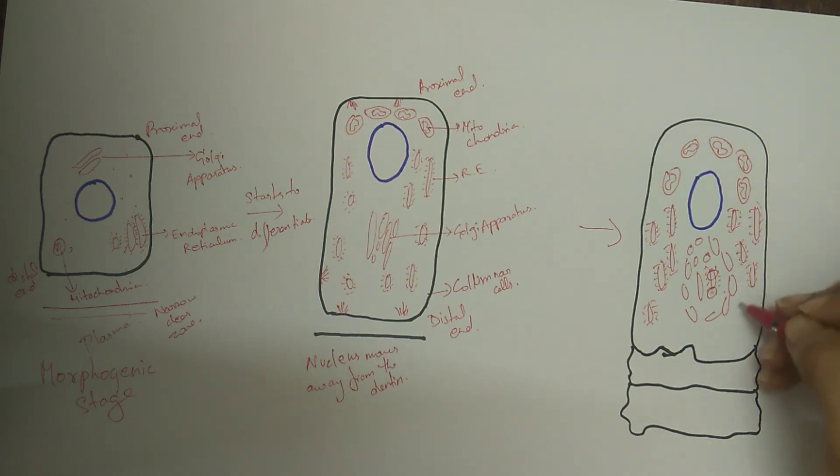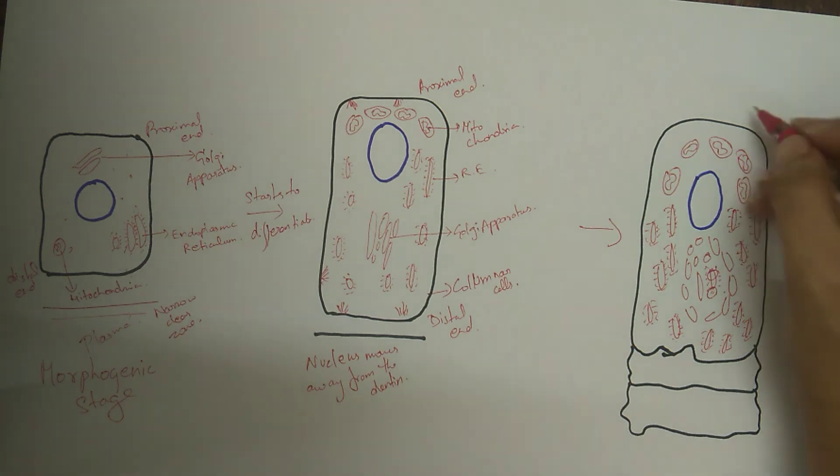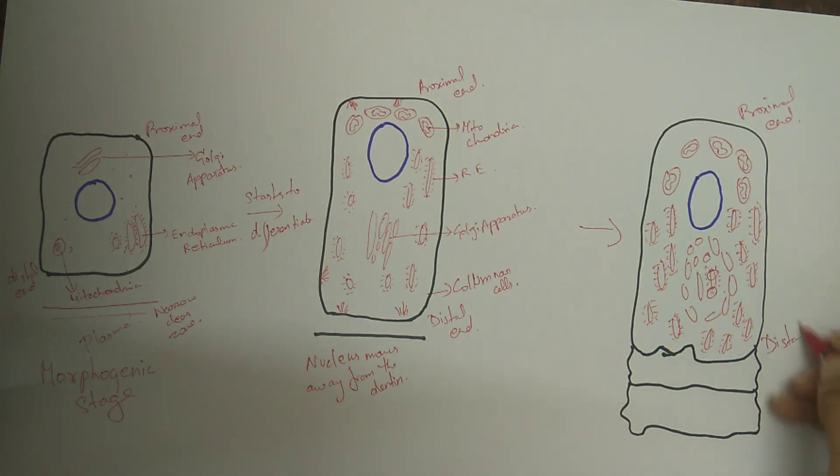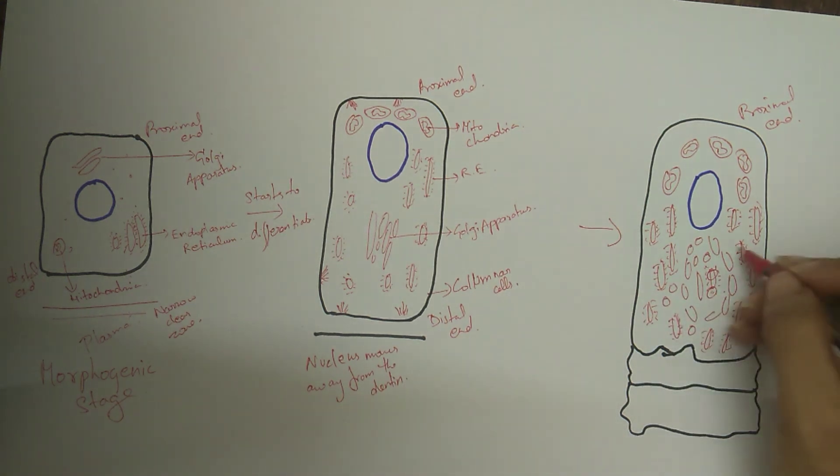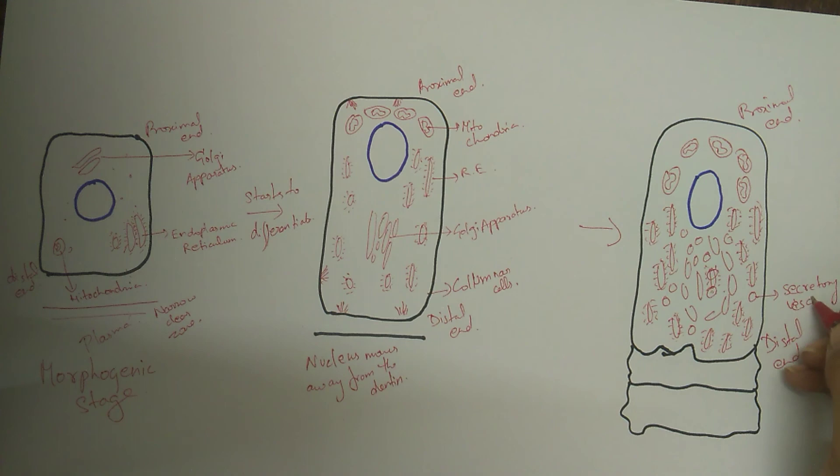This reciprocal interaction and induction is explained already in the developmental stages of the tooth in the advanced belt stage. The link is in the description. In the formative stage, the ameloblast retain the same length but there are changes in the organization and the number of cytoplasmic organelles which reflect their intense synthetic and sensory activity.